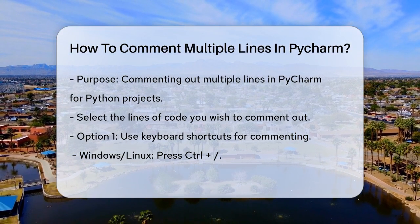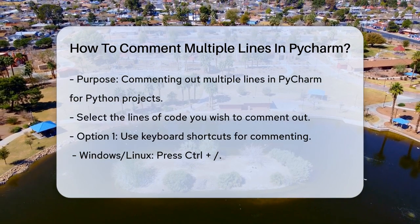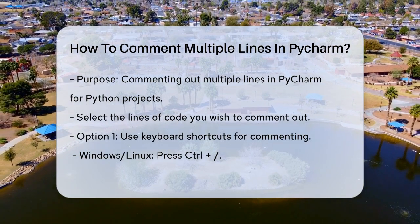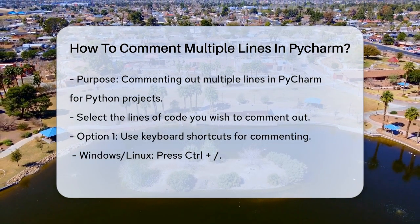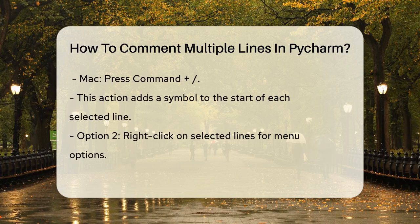First, select the lines of code you want to comment out. This could be a few lines, a whole function, or any section of your code. Once you've selected the lines, you have a couple of options to comment them out.